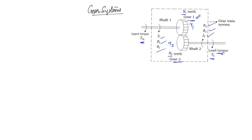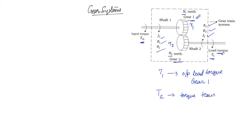We will also consider two more parameters: T1, which is the output load torque from gear 1, and T2, which is the torque that is transmitted from gear 1 to gear 2. Basically, T1 acts as the output torque for gear 1 and T2 acts as the input torque for gear 2.